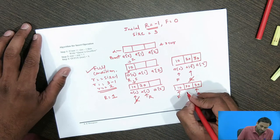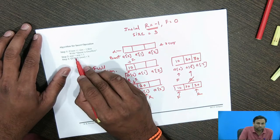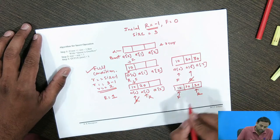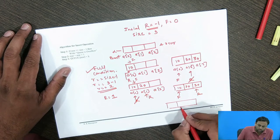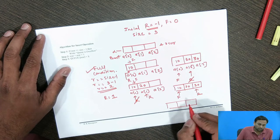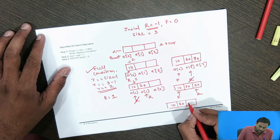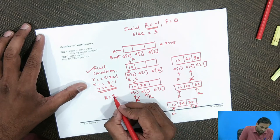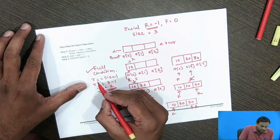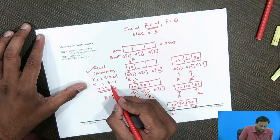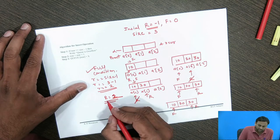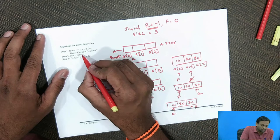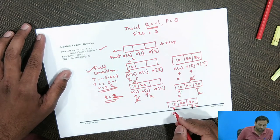Front remains at the same position. Now when we check the full condition again for the queue containing 10, 20, and 30, rear is pointing to index 2 and rear == size - 1 = 3 - 1 = 2. Yes, this condition is satisfied, so we cannot insert a new element into the queue — it will show queue overflow.